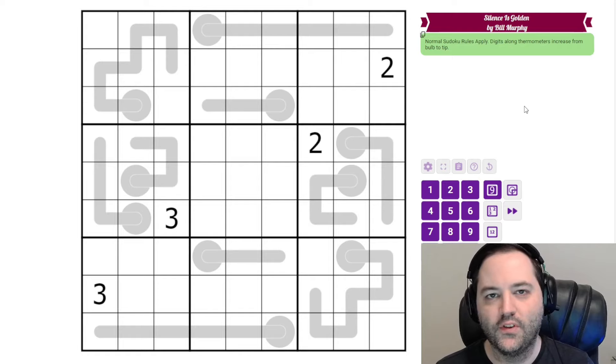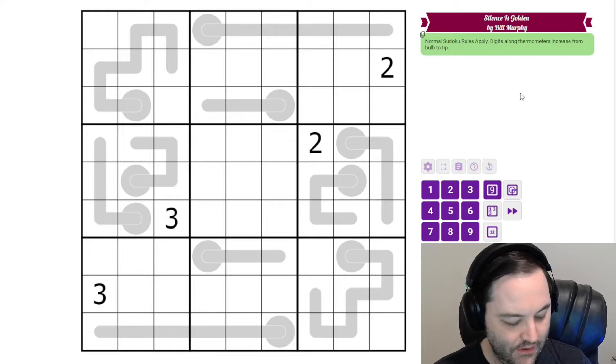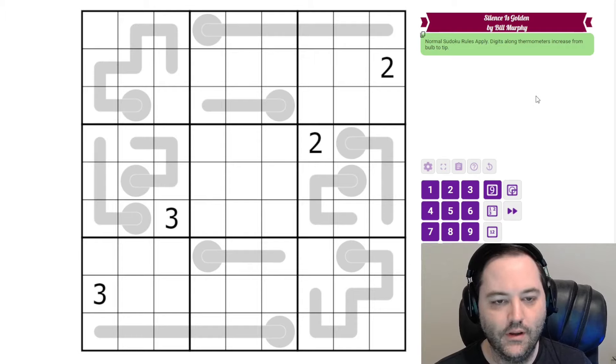Hi everyone, this is a walkthrough for Silence is Golden by Bill Murphy. This is the gas for February 3rd, and I'm feeling pretty bad right now, so if I seem a little off, that's why. Zoe came down with something yesterday, and I have it now too. So I'm going to try and get through this puzzle as quickly as possible, but I will still try and explain everything.